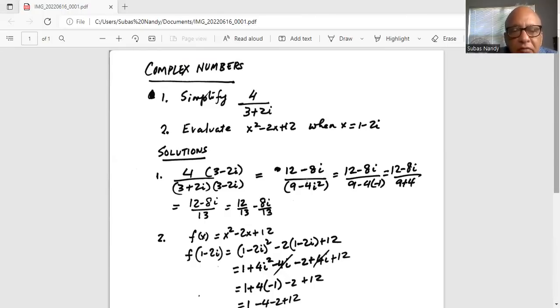So the numerator, then we distribute the 4, it becomes 4 times 3, 12 minus 4 times 2, 8i divided by, we use the formula for a plus b times a minus b, which is a squared minus b squared. So a is 3, so 3 squared is 9 minus b is 2i, which is 4i squared.